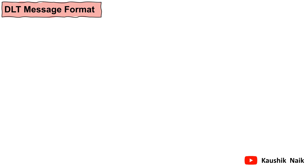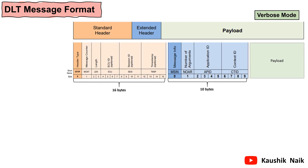Now let's see the DLT message format in these two modes. In verbose mode, there are three sections: Standard header, Extended header, and the payload. In verbose mode, the DLT module appends the log message with the complete header and then sends it to the communication bus. Both Standard and Extended headers will be appended here. The Standard header is 16 bytes and the Extended header is 10 bytes.